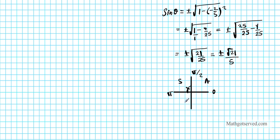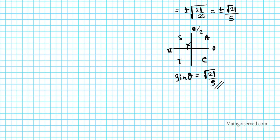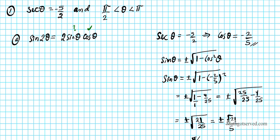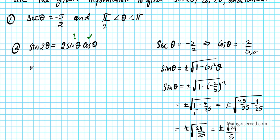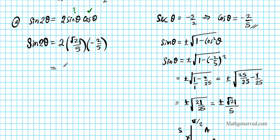We know that all students take calculus — in quadrant 2 we have S, meaning sine and its reciprocal cosecant are positive. So sine theta is going to be positive root 21 over 5. Now we have the information we need to find sin 2θ. Sin 2θ equals 2 times sine theta, which is root 21 over 5, times cosine theta, which is negative 2 over 5. Multiplying across, sin 2θ equals negative 4 root 21 over 25.